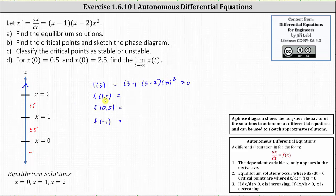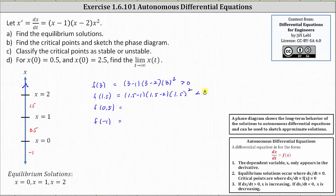Now let's determine the sign of f of 1.5, which equals the quantity 1.5 minus one times the quantity 1.5 minus two times the square of 1.5. We have a positive times a negative times the square of a positive, which is going to be negative or less than zero. This indicates when x is between one and two, as t approaches infinity, x of t is decreasing, which we indicate using a down arrow.